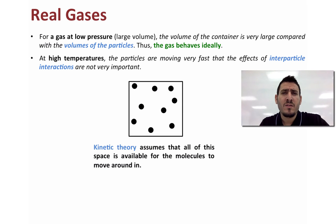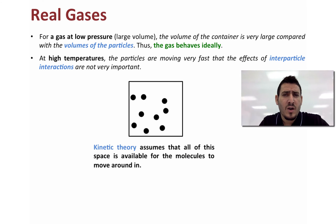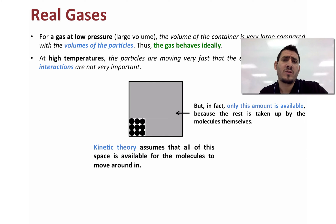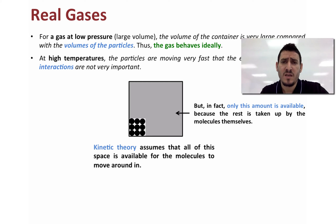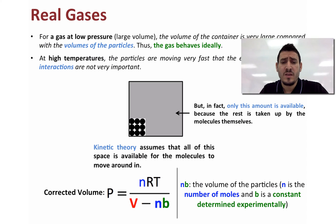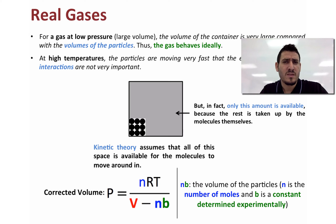The kinetic molecular theory assumes that all the volume of the container is available to the gas molecules. However, only the volume outside the molecules themselves is available. For that we need to correct the volume in the ideal gas law: pressure equals nRT divided by V minus nB, where nB is the volume of the particles, n is the number of moles, and b is a constant determined experimentally.